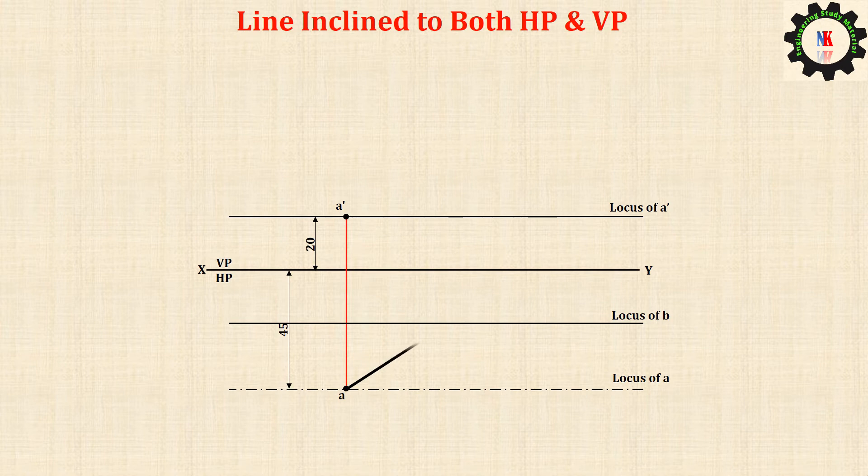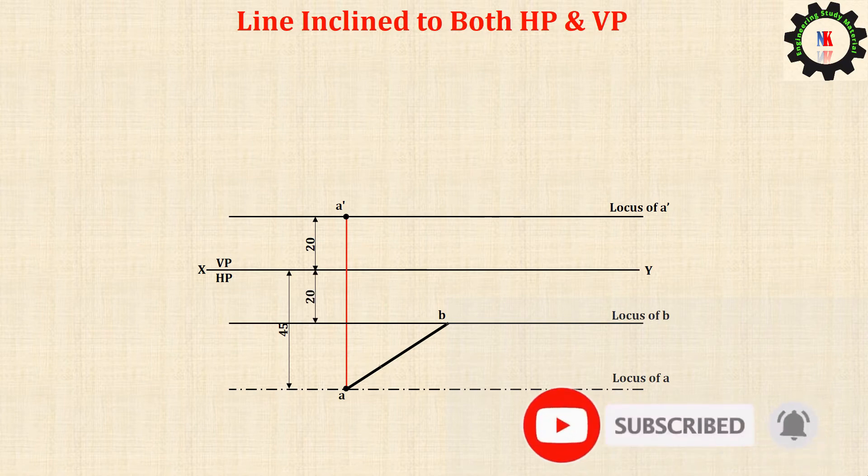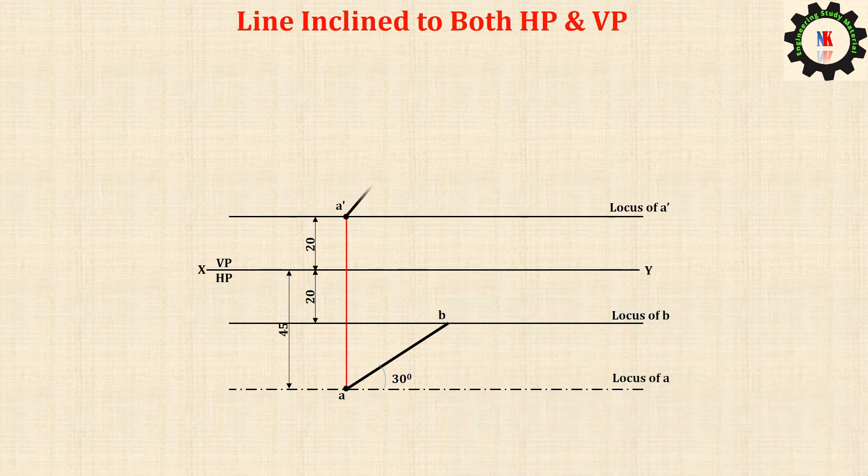Draw the top view with an inclination of 30 degrees to XY line. Draw the front view from a dash with an inclination of 45 degrees to XY line. Connect B and B dash with a vertical projector; they should be present on same line.